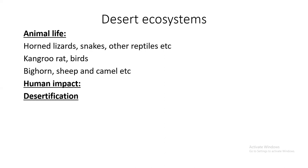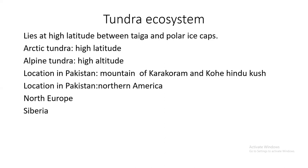The next ecosystem is the tundra ecosystem. It has very little vegetation and lies at high latitudes between taiga and polar ice caps. At high altitudes, above the timber line across mountains, it is also called tundra. These are very cold regions where very few organisms can survive due to extreme cold.